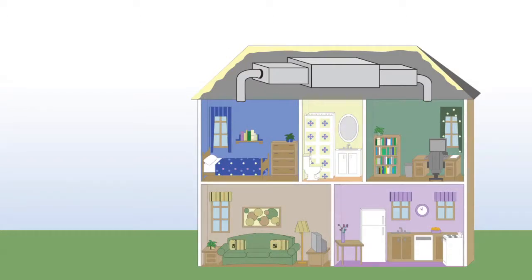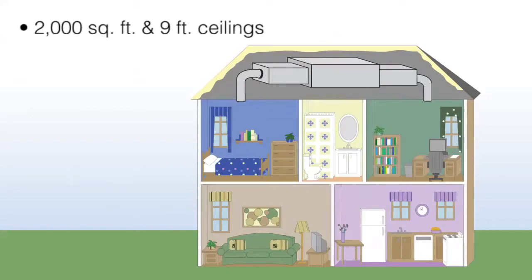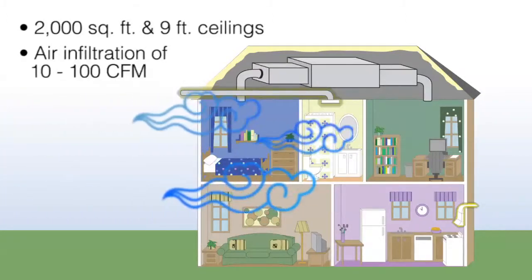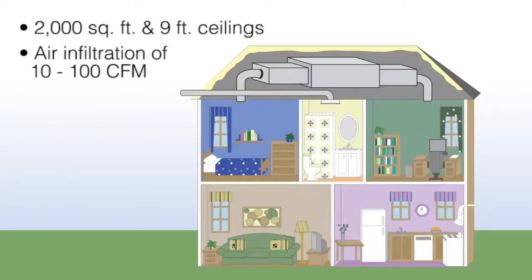Let's define a typical house so we've got some examples to work with. Today we'll use 2,000 square feet with 9 foot ceilings. The amount of air that may pass through a home of this size typically ranges from 10 to 100 cubic feet per minute of infiltration and ventilation. This could be from bath fans, range hood, wind, or dedicated mechanical ventilation.